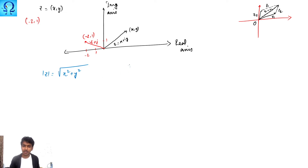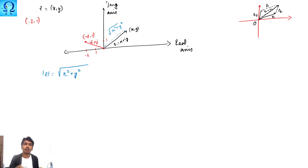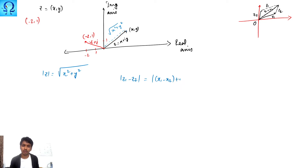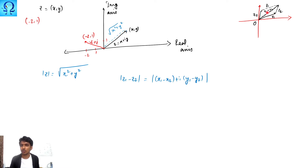The magnitude physically means the distance of the vector from the origin. This distance from the origin to a particular point on the plane is √(x² + y²), which is the modulus of the complex number. To calculate the distance between any two points z1 and z2, it is given by |z1 - z2|, which equals |(x1 - x2) + i(y1 - y2)|.